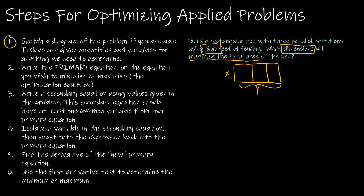Step two: write the primary equation, which is the equation you're trying to minimize or maximize. In this case I'm trying to maximize the total area, so based on my picture I would find my area by taking x times y, because that accounts for all of the area inside all three pens. If you drew your picture differently your equation might look a little different, but in the end we should get the same solution.